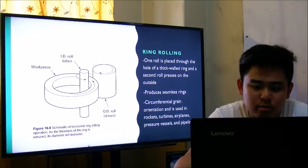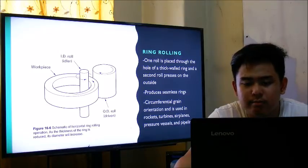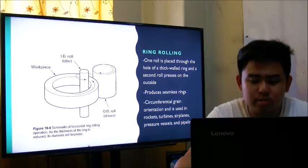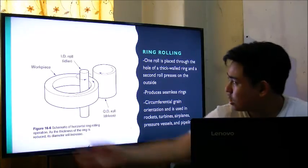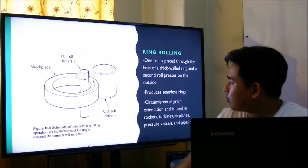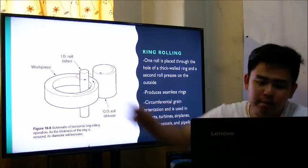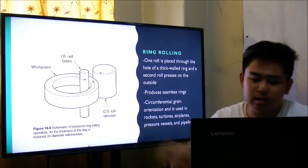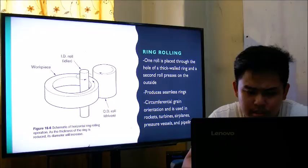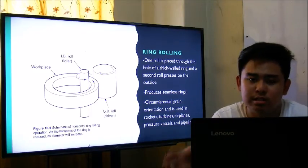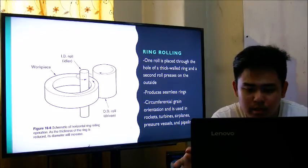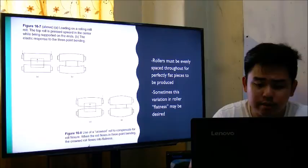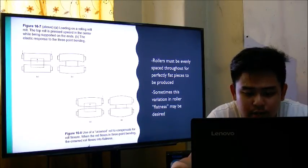Ring rolling: one roll is placed through the hole of a thick-walled ring and a second roll presses on the outside, producing seamless rings with circumferential grain orientation. It is used in applications such as rockets, turbines, airplanes, pressure vessels, and pipelines. The output is a seamless ring. Rollers must be evenly spaced throughout for perfectly flat pieces to be produced, though sometimes variation in roller flatness may be desired.